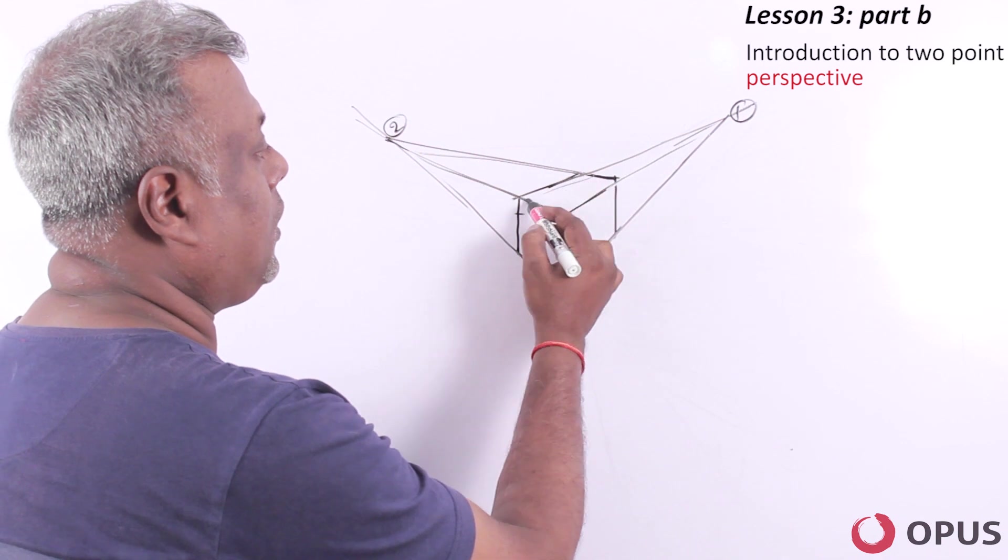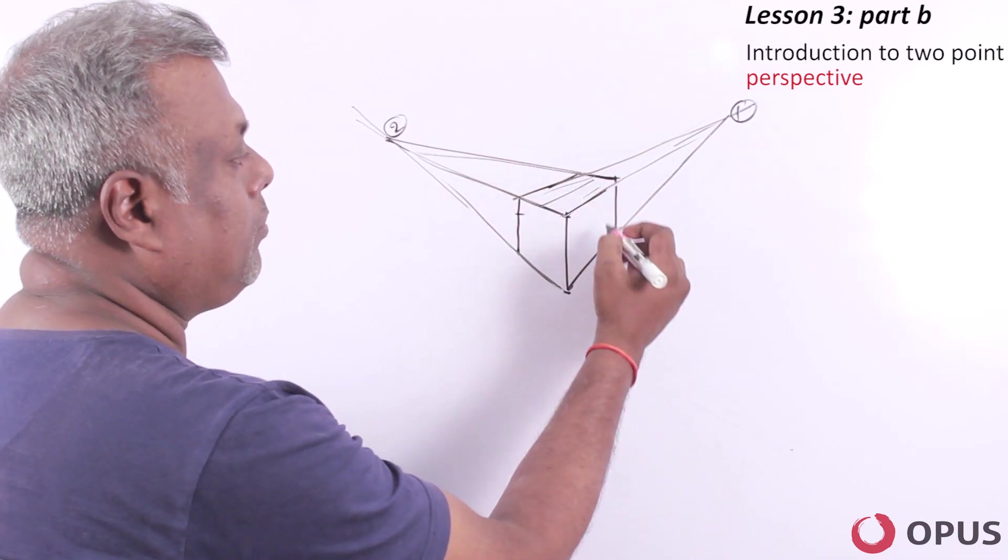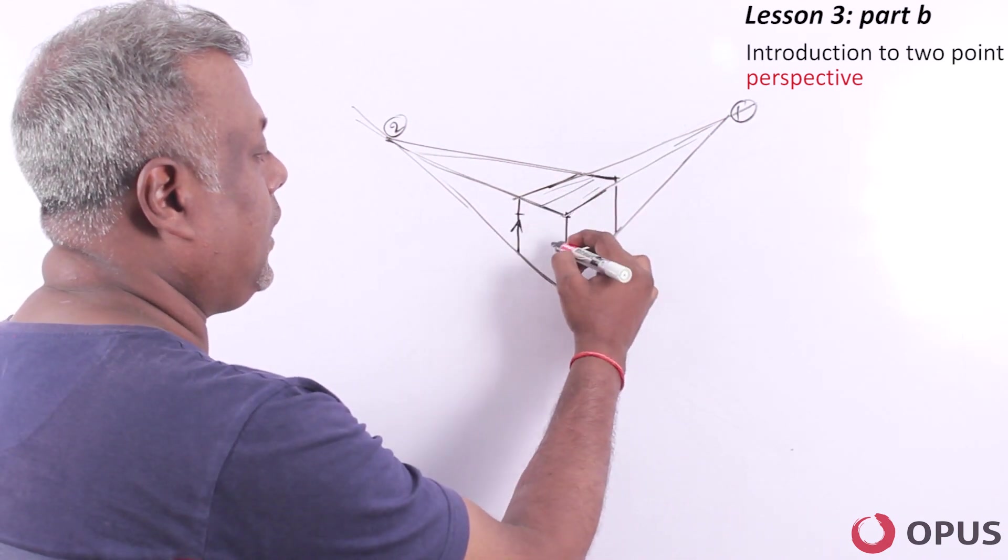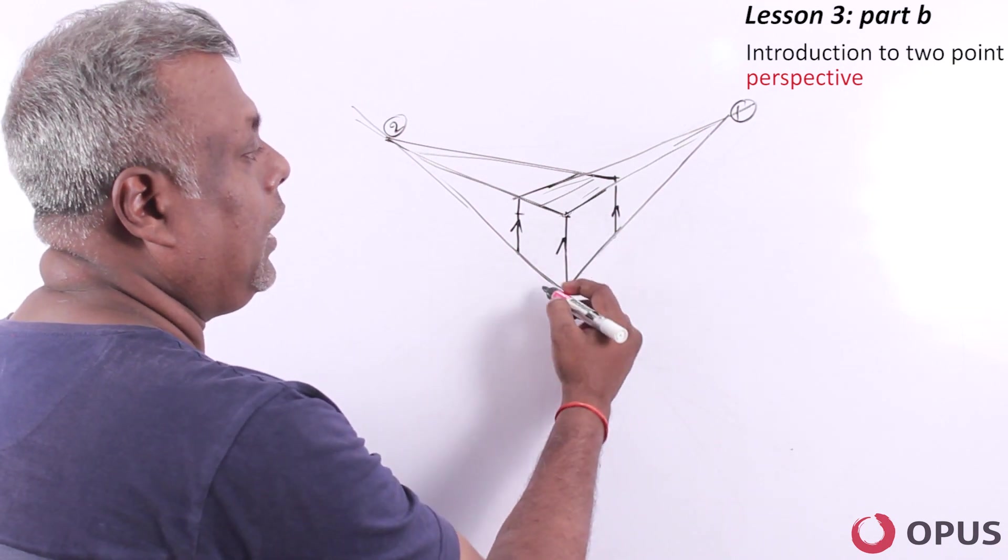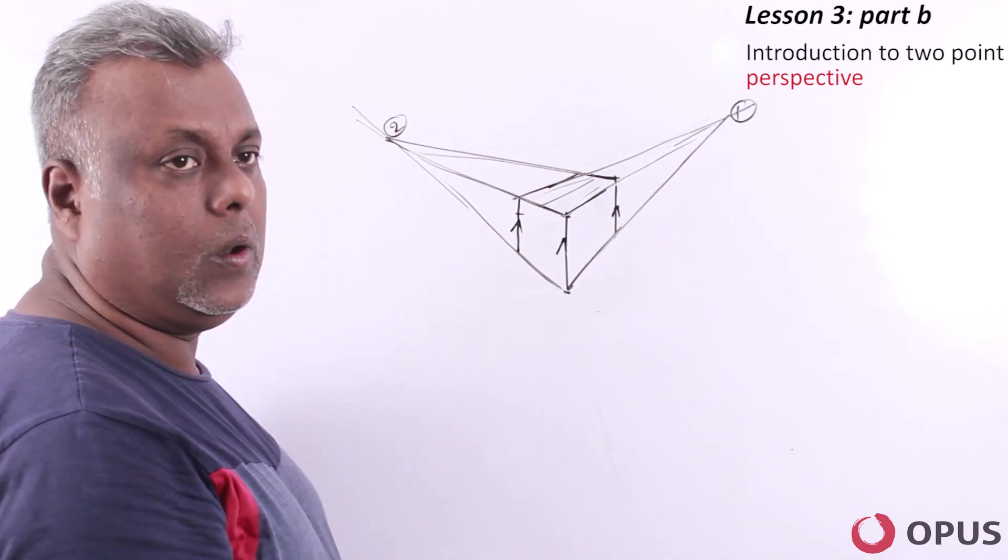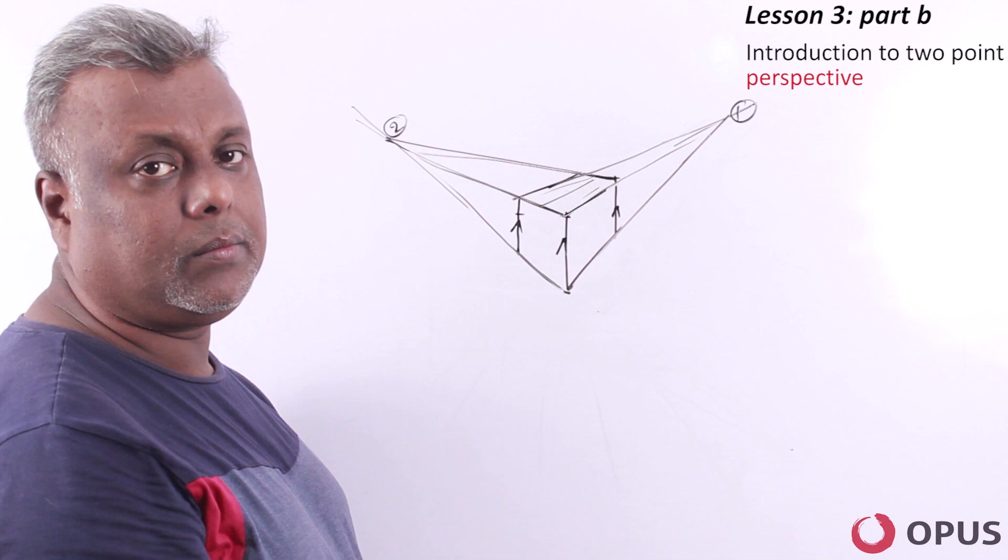So the planes over here are not parallel. Only this line is supposed to be parallel, and the other lines are not parallel at all. They converge at a beginning point.